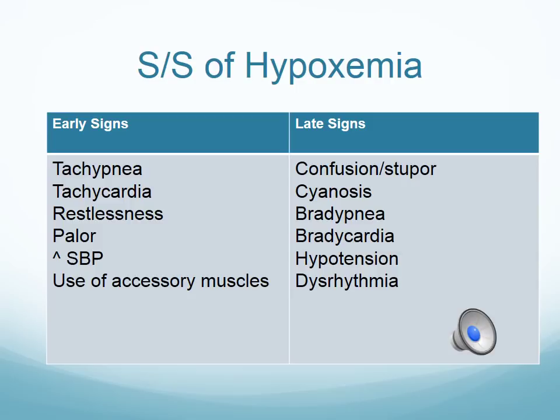All kids should have a pulse ox placed, even if they don't look symptomatic — better safe than sorry. A lot of undiagnosed congenital heart defects are found simply by putting a pulse ox on a child. Your goal for pediatric pulse ox is greater than 92%, unless you have a congenital heart child — that can be anywhere. For the early signs of hypoxemia, also note increased systolic blood pressure as part of that anxiety response.